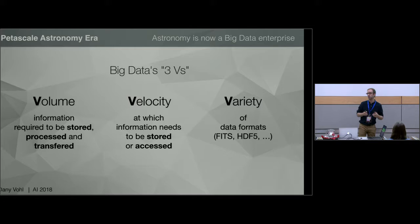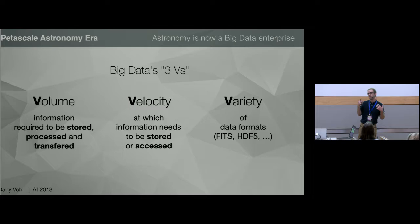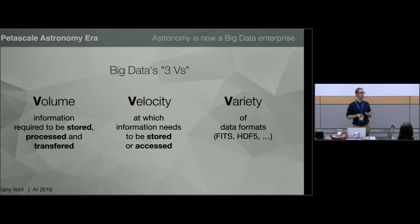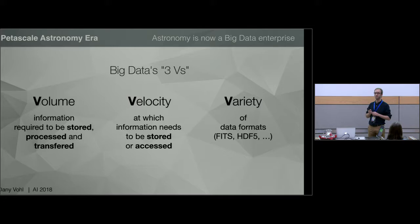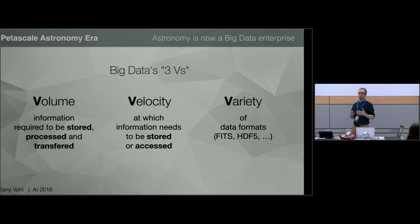I wanted to talk about issues of the volume and velocity of data in astronomy nowadays and ways to go around that. Astronomy is a data-driven science and we have to deal with big data. One way to talk about it is via the three V's: volume, velocity, and variety. Volume is basically the sheer volume of data — it can be lots of files, big files, or a mix of both.